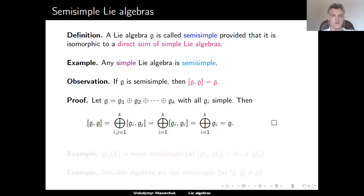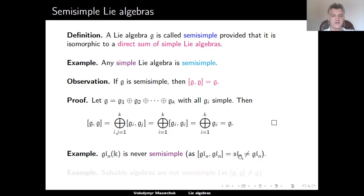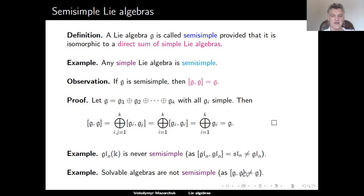This completes the proof of our observation. From this, it follows that the Lie algebra GL(N,K) is never semi-simple because its derived algebra is equal to SL(N), which is always different from GL(N). SL(N) consists of matrices of trace 0 in GL(N). Another example is that solvable algebras are not semi-simple, as the derived algebra of a non-zero solvable Lie algebra always differs from the algebra itself.